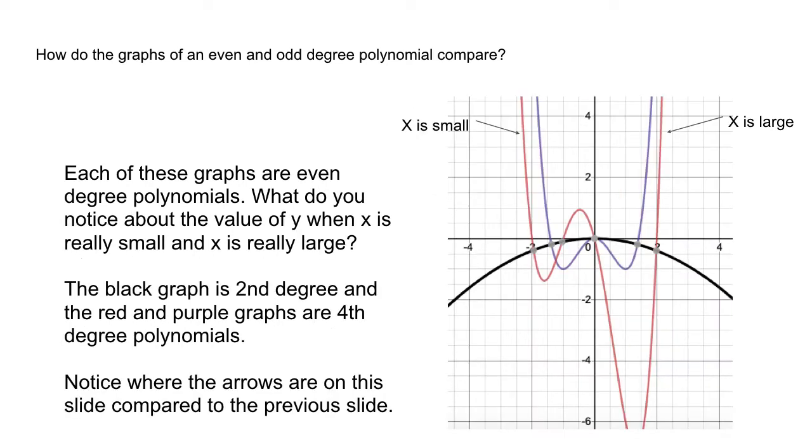Here each one of these graphs is an even degree polynomial. I can see that easily by looking at the graph. For instance, in the red graph when x is very small, my y values are positive, and when x is very large, notice the graph has returned up to the positive. So when x is small I'm positive and when x is large it's positive. Same thing with the purple graph.